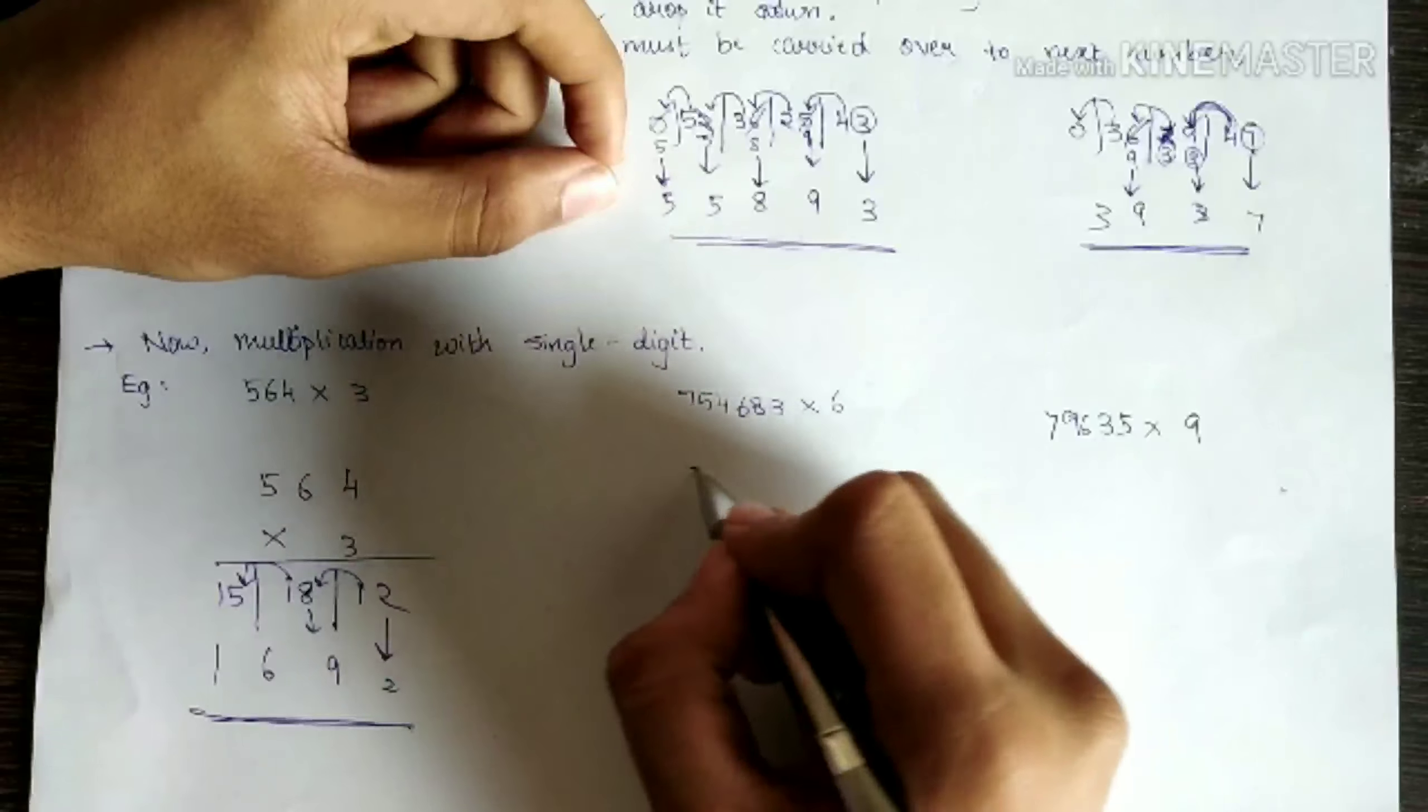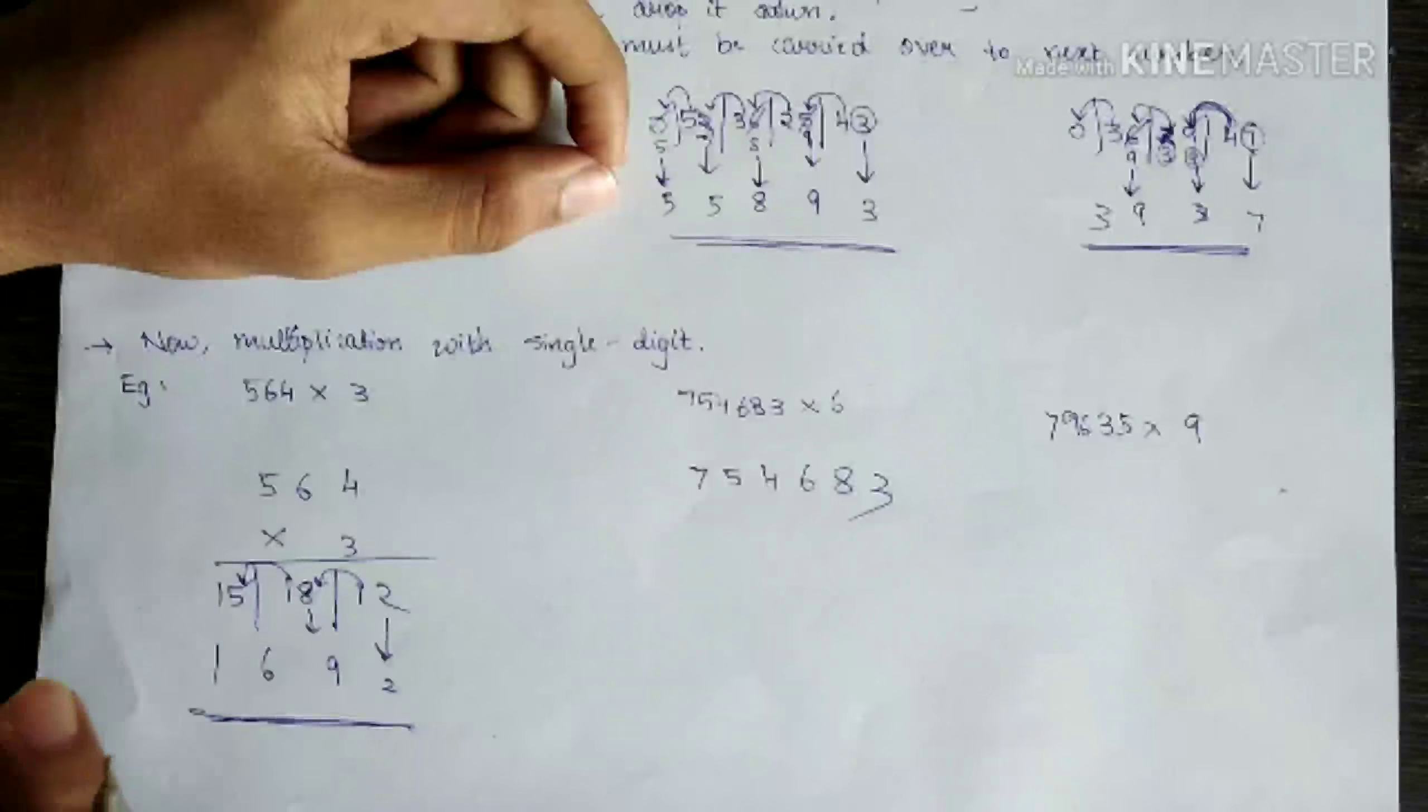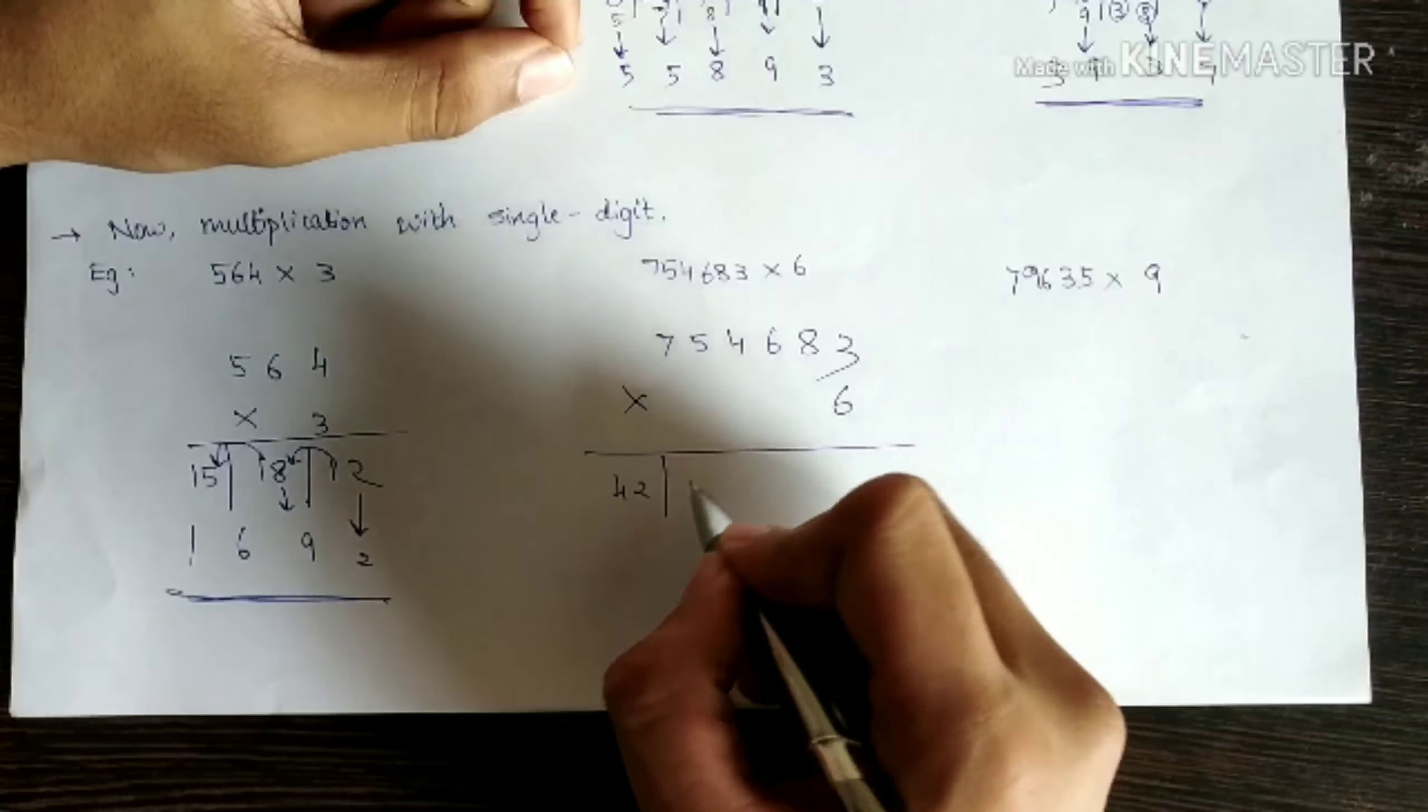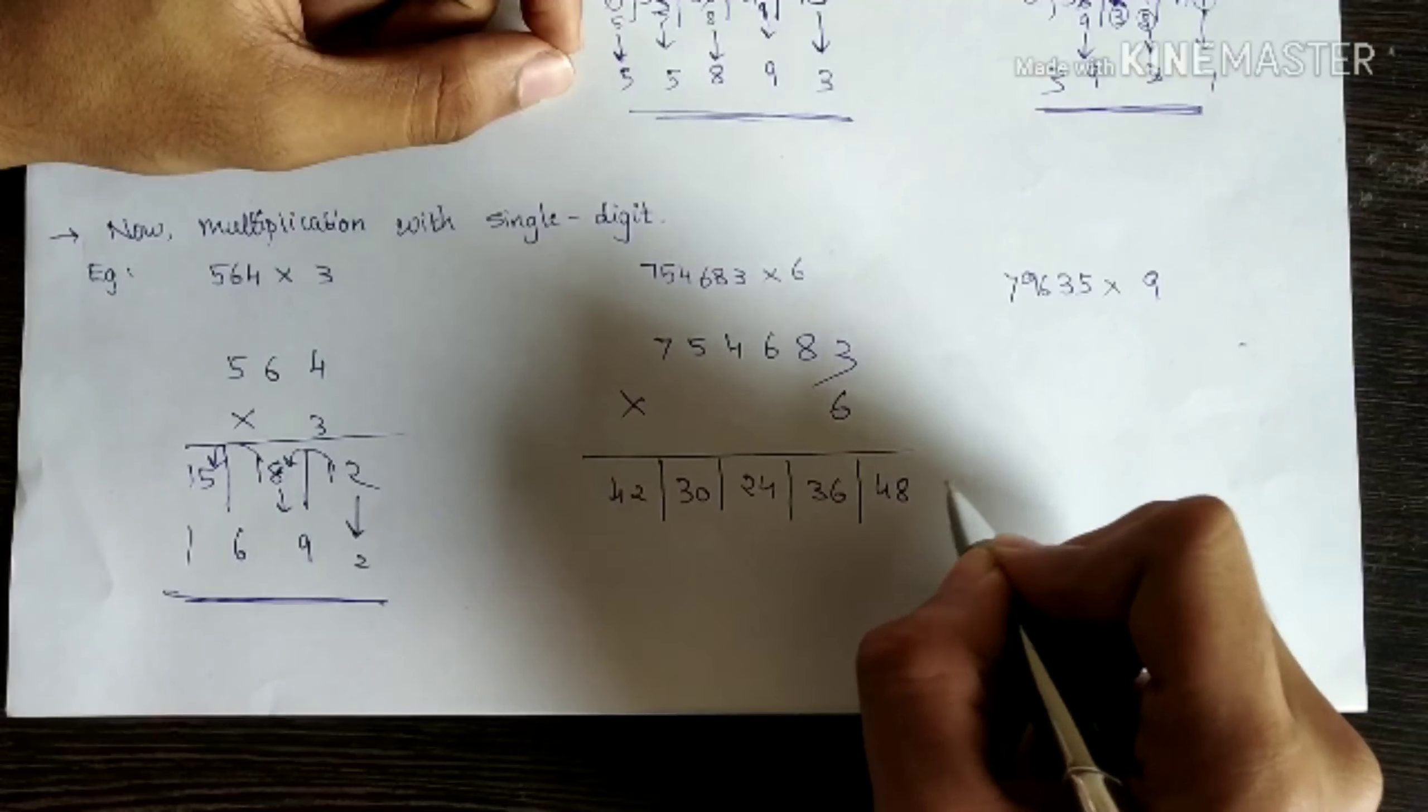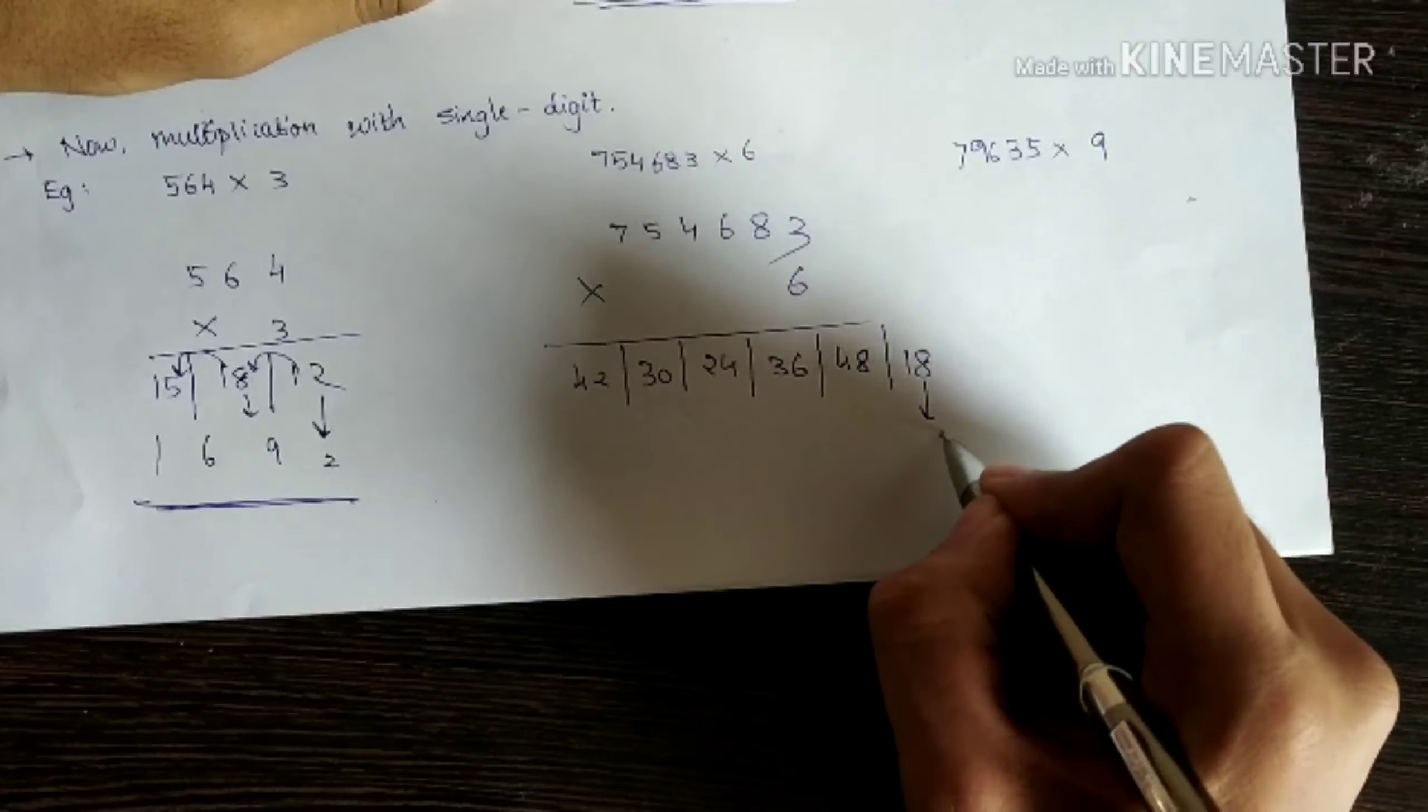The next question seven five four six eight three. However big the number is method is the same. Times six. Six times seven, forty two. Six times five, thirty. Six fours are twenty four. Six sixes are thirty six. Six eights are forty eight. Six threes are eighteen. Any big number multiplied like this.